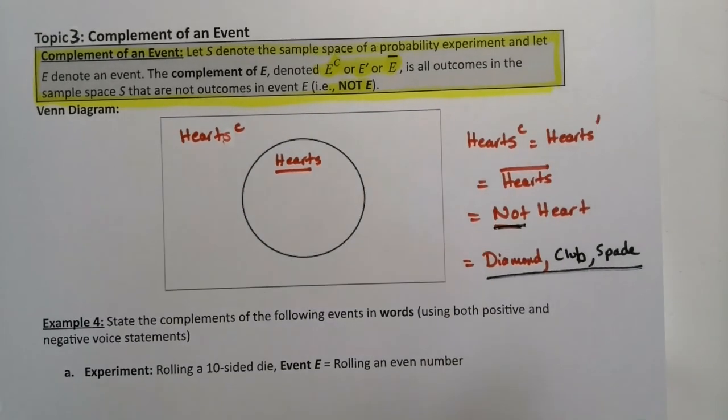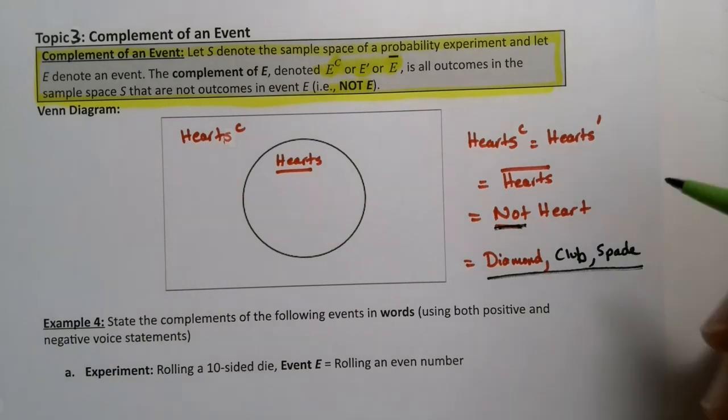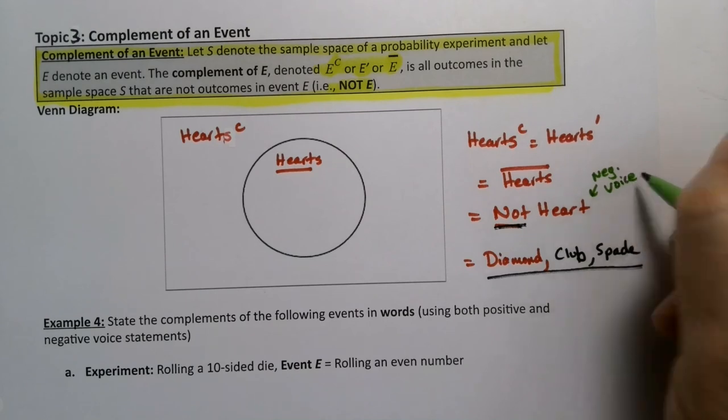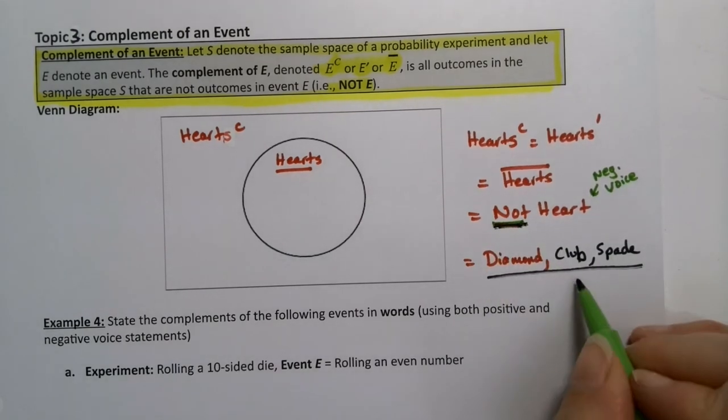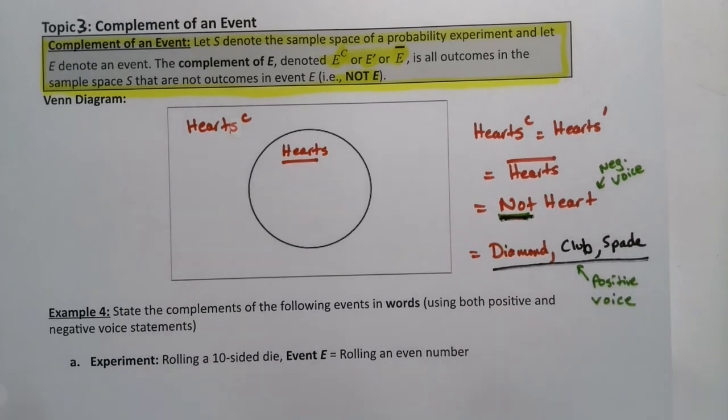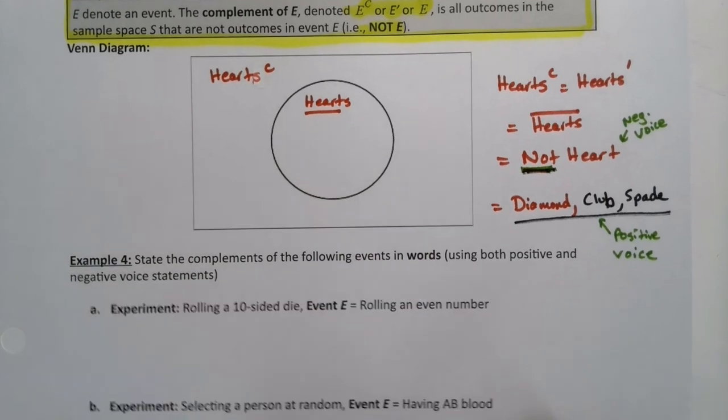Now there's one other thing to note here, which is voice. So this is a negative voice. You're saying it's not a heart. So I'm saying negative, right? It's negative, not a heart. This is a positive voice. And there are times when we want to use one and there are times when we want to use the other. So you need to be able to do both, which is why I have you practicing that in this example down here. So let's do so.